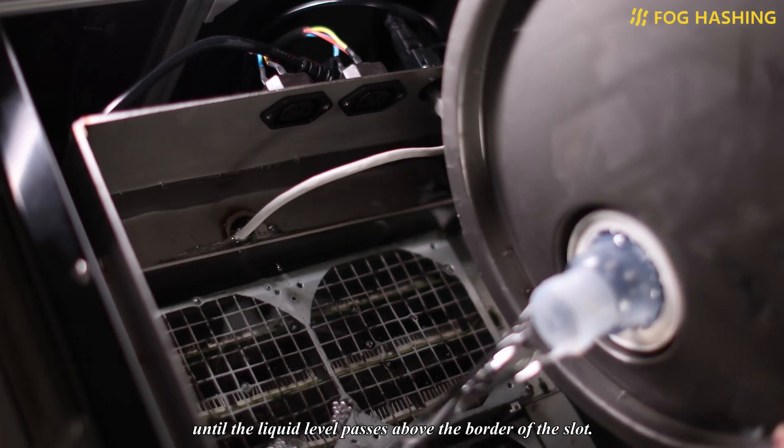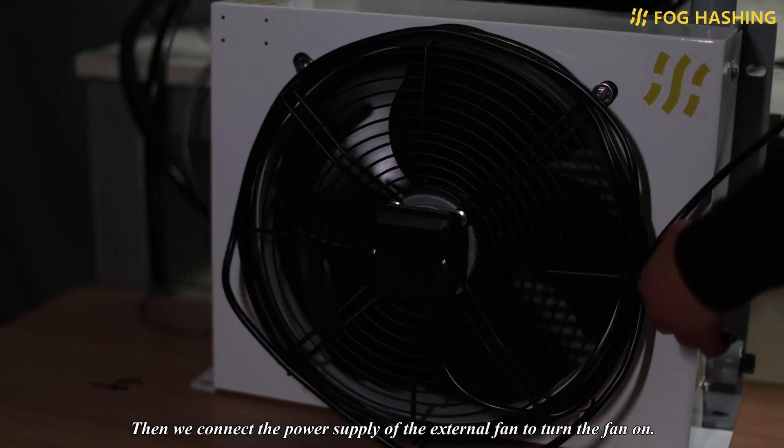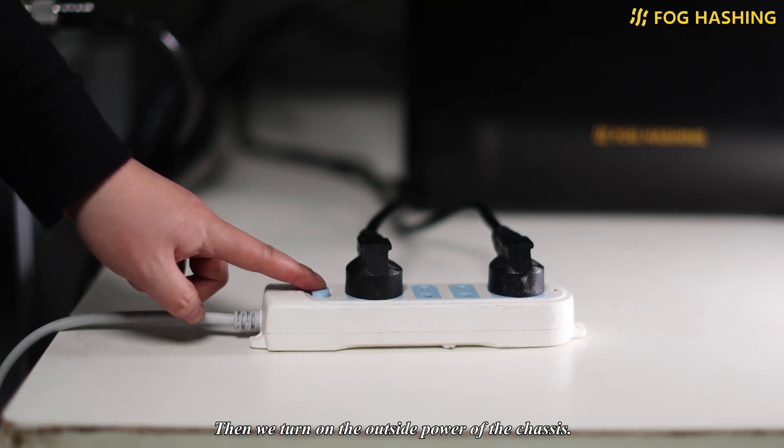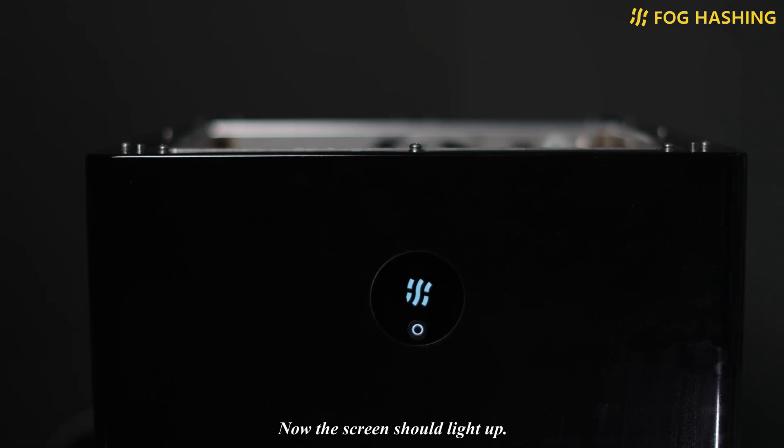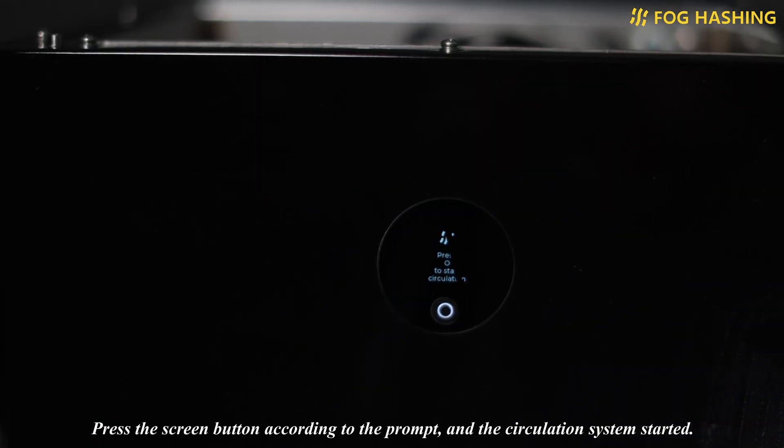Then we connect the power supply of the external fan to turn the fan on. Then we turn on the outside power of the chassis, but don't connect the power cord inside the chassis. Now the screen should light up. Press the screen button according to the prompt and the circulation system started.